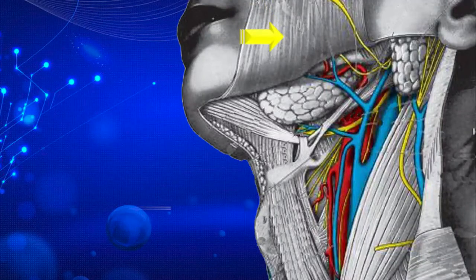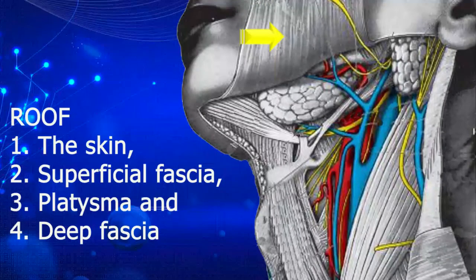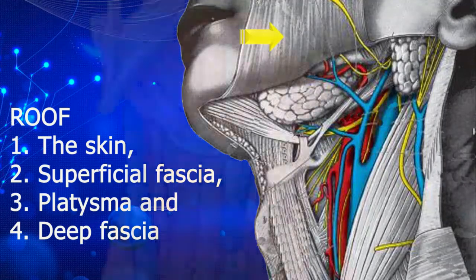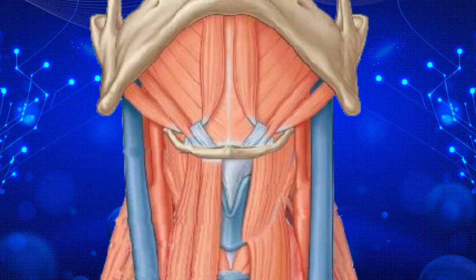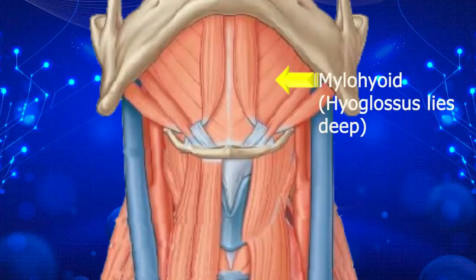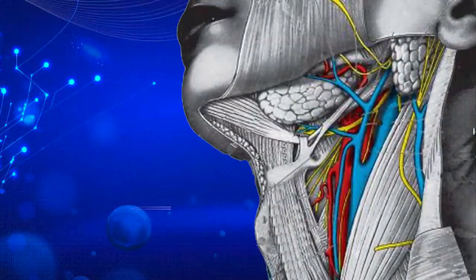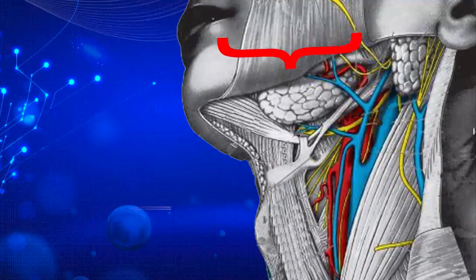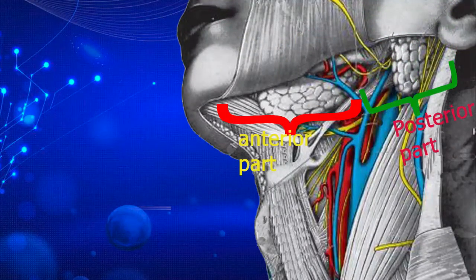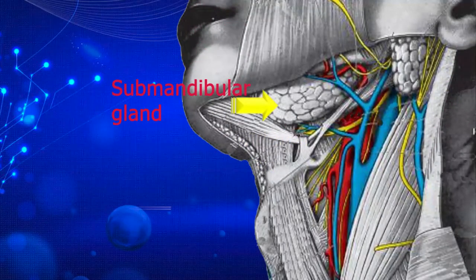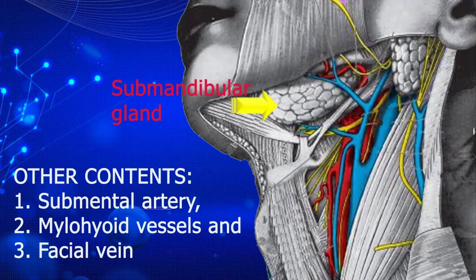The roof is formed by the skin, superficial fascia, platysma muscle and the deep fascia. Its floor is formed by two muscles: the mylohyoid and the hyoglossus muscle. The contents within the digastric triangle can be divided into the contents in the anterior part and those in the posterior part. The major content in the anterior part is the submandibular salivary gland. We will also see the submandibular lymph nodes, submental artery, mylohyoid vessels and the facial vein.